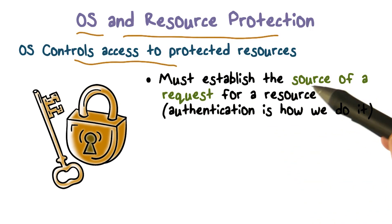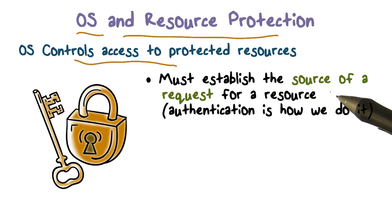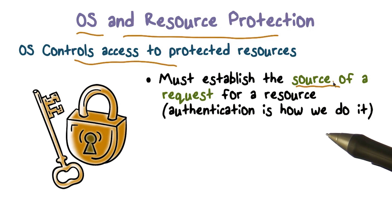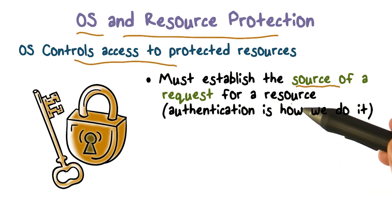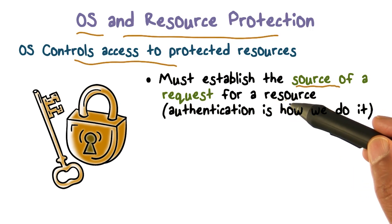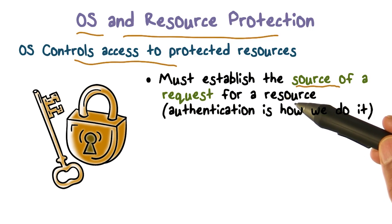First, it must establish who is making the request — what is the source of the request. The request always has a source, the entity that is making the request, and it has a target, which is the resource that is being requested. So the operating system has to know who is making the request and what is being requested.